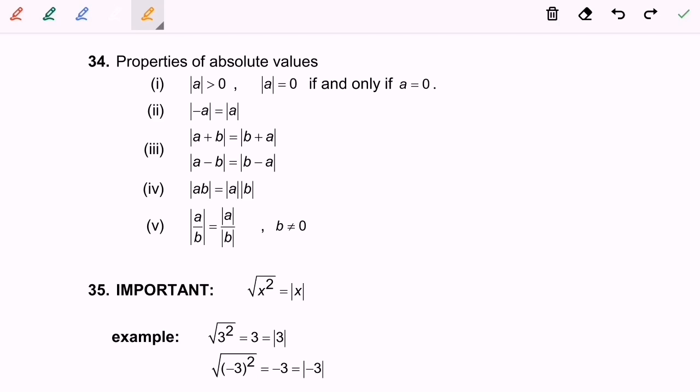Hello everyone. So now I'm going to discuss 2.3 absolute value. Based on statement 34 are the properties of absolute value. Number one, the modulus of a is greater than zero. The modulus of a is equal to zero if and only if a is equal to zero.